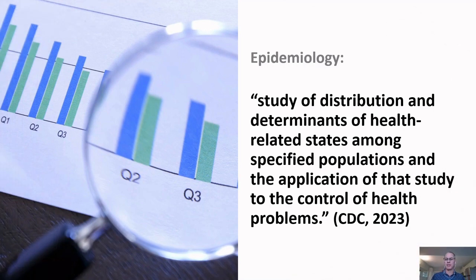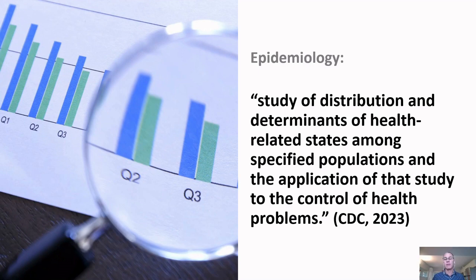By integrating this comprehensive approach, we aim to not only prepare you for exams but to also develop a deeper, more nuanced understanding of epidemiology. Before we dive deeper into epidemiology and its application to evidence-based medicine, let's understand its core definition. The Centers for Disease Control and Prevention, or the CDC, defines epidemiology as the study of the distribution and determinants of health-related states among specified populations and the application of that study to the control of health problems. Epidemiology is not just about identifying health issues — it's about understanding who is affected, where, and why. It examines the patterns, causes, and effects of health and disease conditions in populations, and is grounded in understanding the complex interplay of factors that influence health outcomes, from genetic predispositions to environmental exposures and even behavioral patterns.